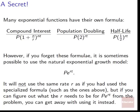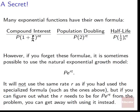Here's a secret: many exponential functions have their own formula. Things like compound interest use P times (1 + r/n) raised to n times t. Population doubling uses P times 2 to the rate times t. Half-life uses P times one-half to the rate times t. However, if you forget all these formulas, it's sometimes possible to use the natural exponential growth model — PERT. You can sometimes swap out any one of these specialized formulas for P times e to the r times t, where r is the rate of the specific thing you're modeling.